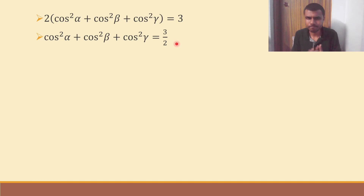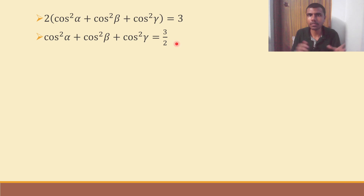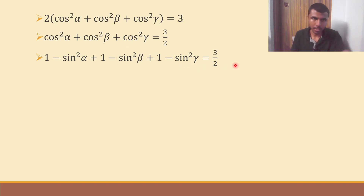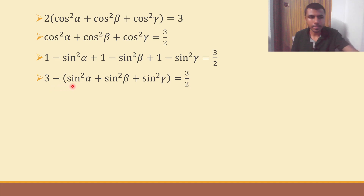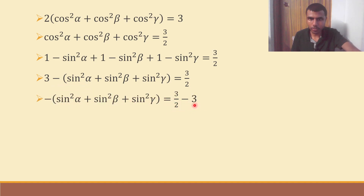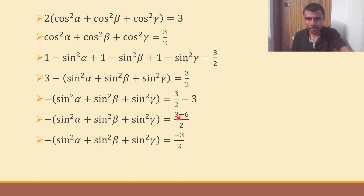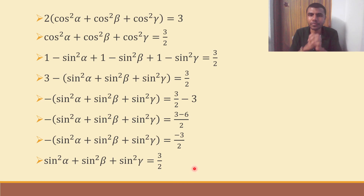We got one of the conditions. We need to get the second condition — that's pretty simple. cos² α can be written as 1 minus sin² α, because in first year trigonometry you learned that cos² θ plus sin² θ equals 1, so cos² θ equals 1 minus sin² θ. In place of cos² α write 1 minus sin² α, cos² β write 1 minus sin² β, and cos² γ write 1 minus sin² γ. So 1 plus 1 plus 1 is 3, minus sin² α plus sin² β plus sin² γ equals 3/2. Sending 3 to the RHS gives minus of that sum equals 3/2 minus 3, which is 3 minus 6 over 2 equals minus 3/2. The negatives cancel, so sin² α plus sin² β plus sin² γ equals 3/2.